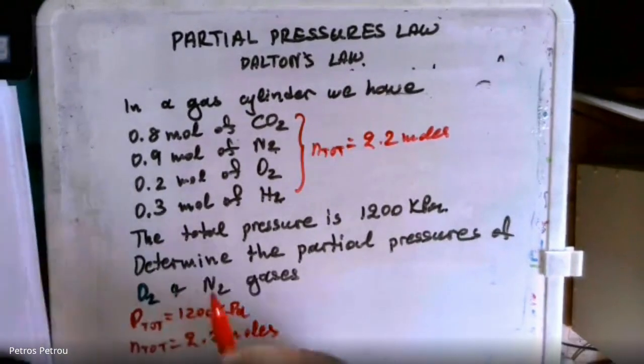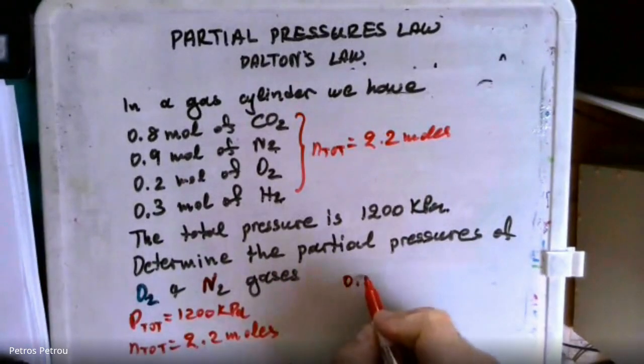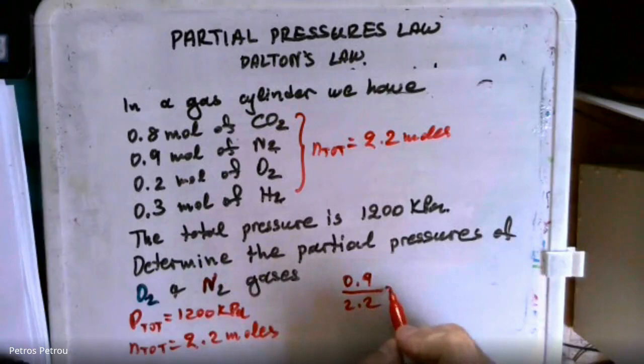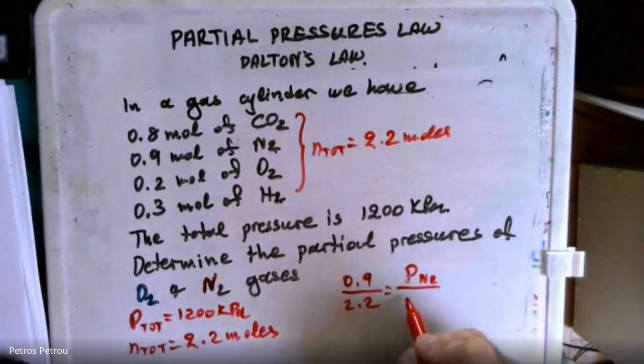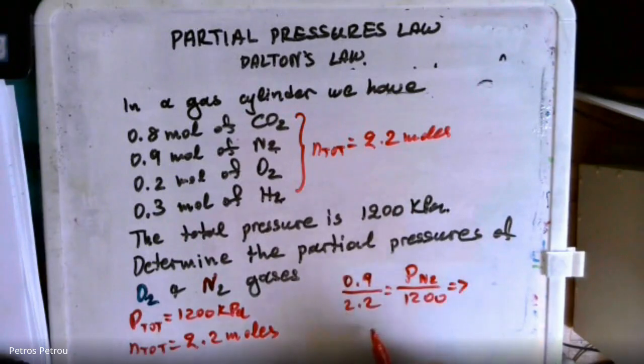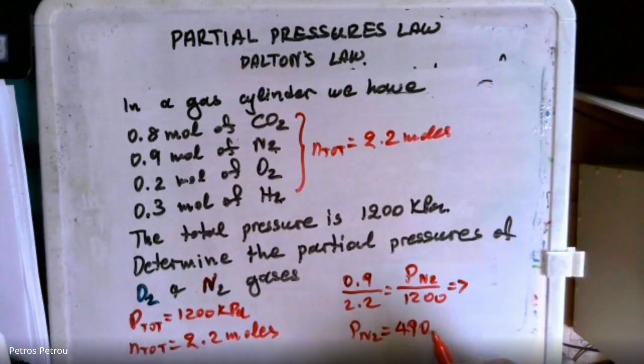So here in the case of nitrogen, you will have 0.9 over 2.2. It will equal the pressure of the nitrogen over 1,200. And of course, here, pressure of the nitrogen, it will be the 0.9 times 1200 divided by 2.2. And we have 490.9 kilopascals.